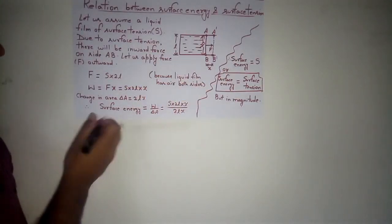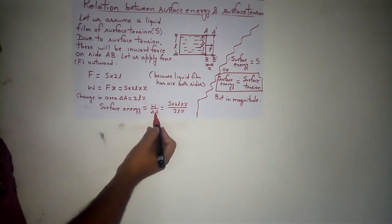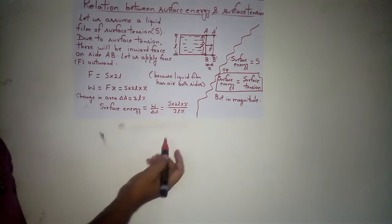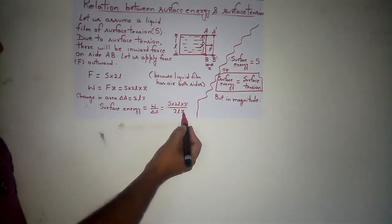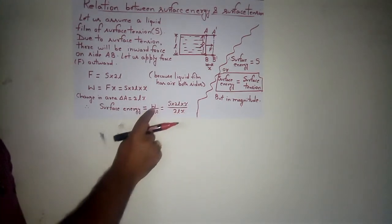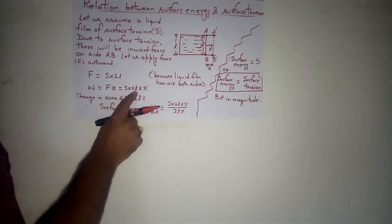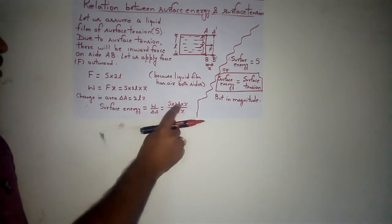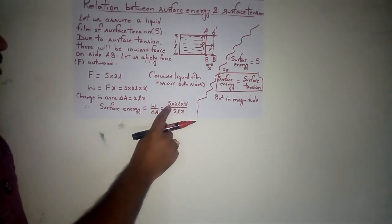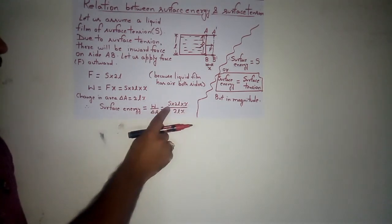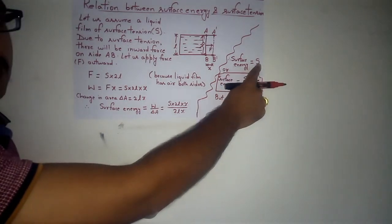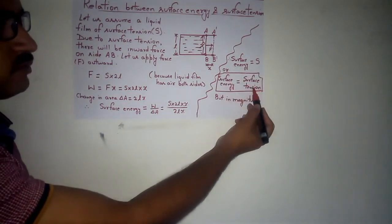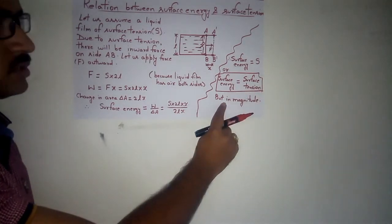Surface energy is equal to work divided by change in area. Substituting the values: W = S × 2Lx and ΔA = 2Lx. The 2Lx terms cancel out, and we are left with surface energy equal to S. Since S is the surface tension, the final result is: surface energy is equal to surface tension.